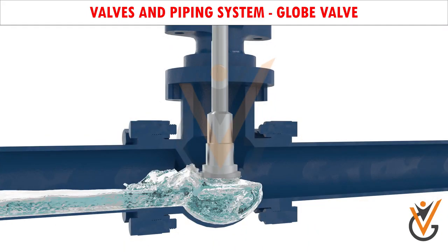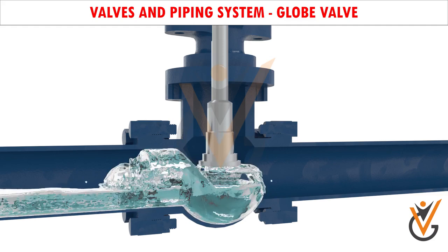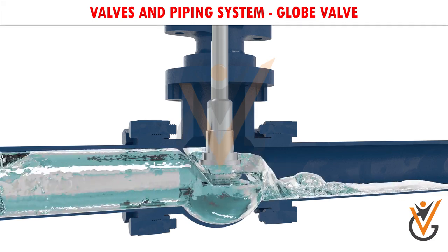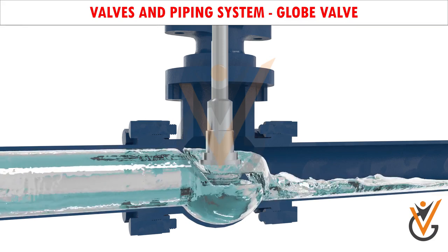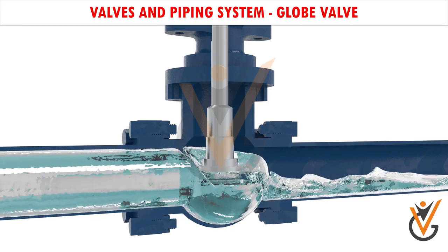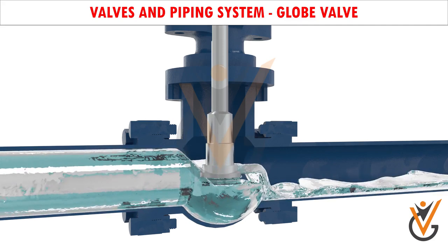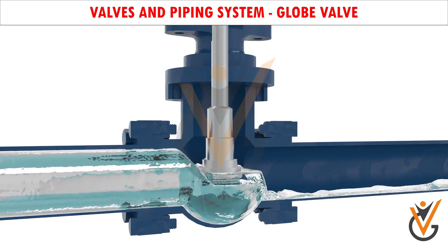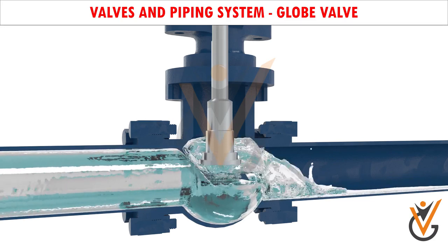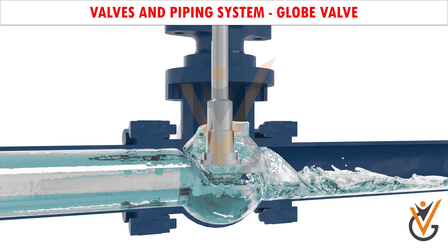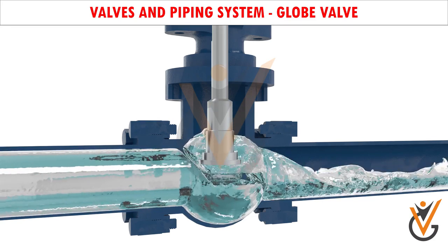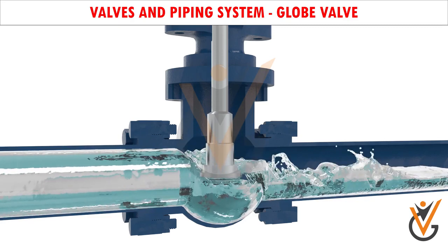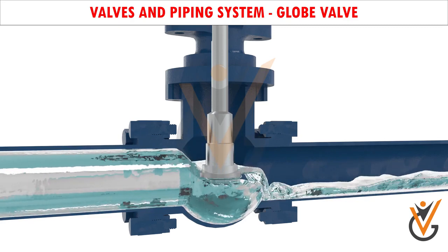This characteristic provides good throttling ability to the globe valve, which is extremely helpful in regulating the flow of the fluid. The globe valve is used not only in starting and stopping the fluid flow, but also for regulating the same.